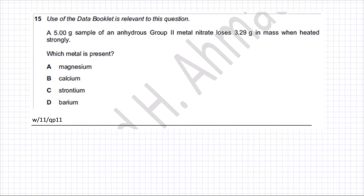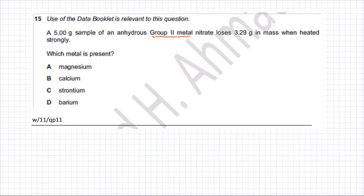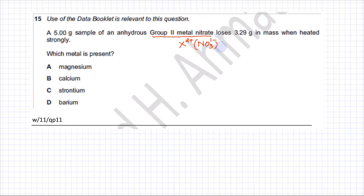The first thing we need to do is come up with an equation. It's a group 2 metal nitrate — we don't know what the metal is, so let's call it X; it has a charge of 2+. Nitrate is NO₃ with a 1− charge. So the formula of the group 2 metal nitrate would be X(NO₃)₂.